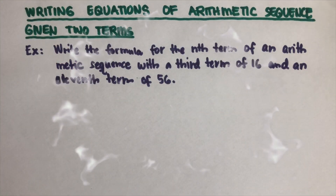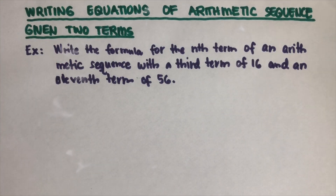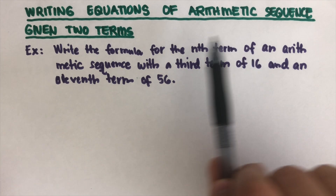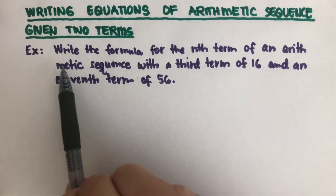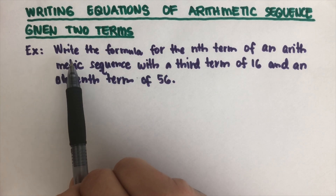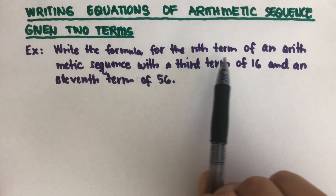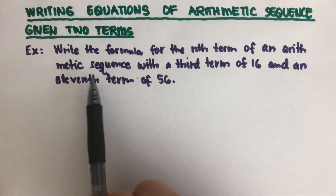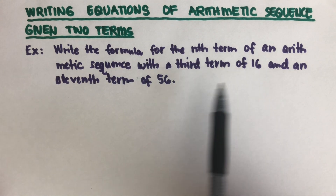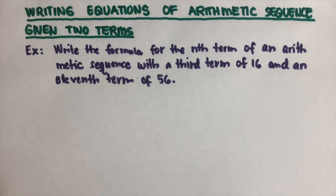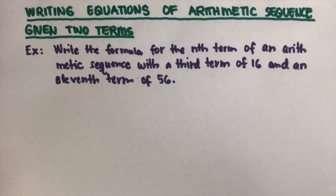Hello everyone, today we will be writing equations of an arithmetic sequence given two terms. We have a word problem: write the formula for the nth term of an arithmetic sequence with the third term of 16 and the 11th term of 56. To make this more visual, we are going to create this sequence.